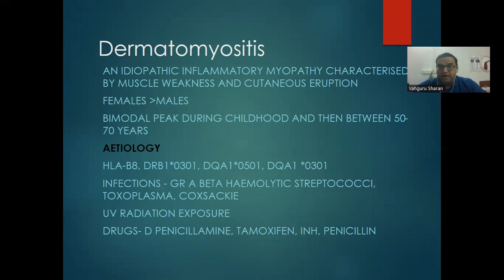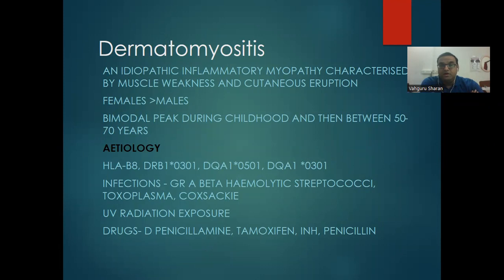Next is dermatomyositis — an idiopathic inflammatory myopathy characterized by muscle weakness and cutaneous eruptions. Common in females. There is a bimodal peak: childhood dermatomyositis and adult/elderly dermatomyositis (50–70 years). HLA associations include HLA-B8, DR-B1, and DQA1*0301. Infections that can trigger dermatomyositis include Group A beta-hemolytic streptococci, Toxoplasma, and Coxsackievirus. UV radiation exposure is also a trigger. Drugs causing dermatomyositis include penicillamine, tamoxifen, interferons, and penicillin.